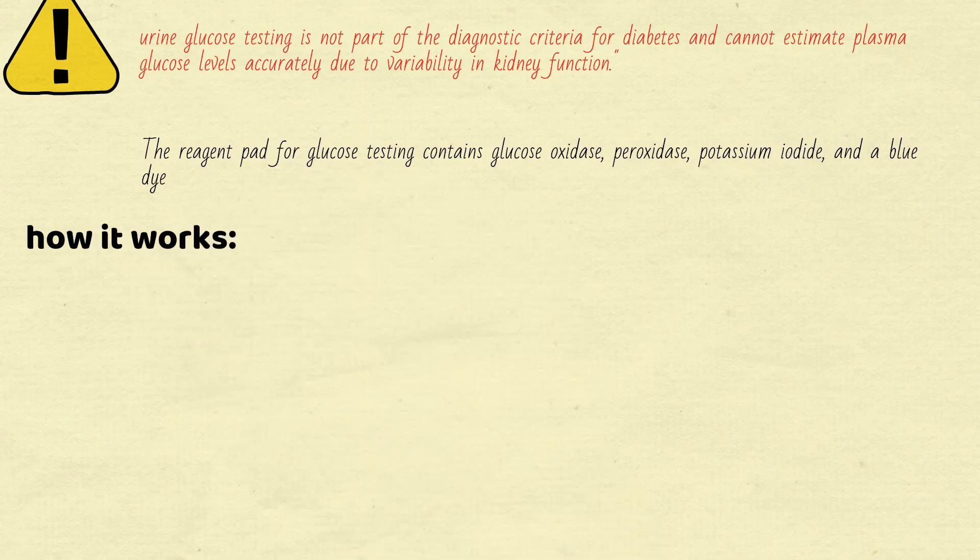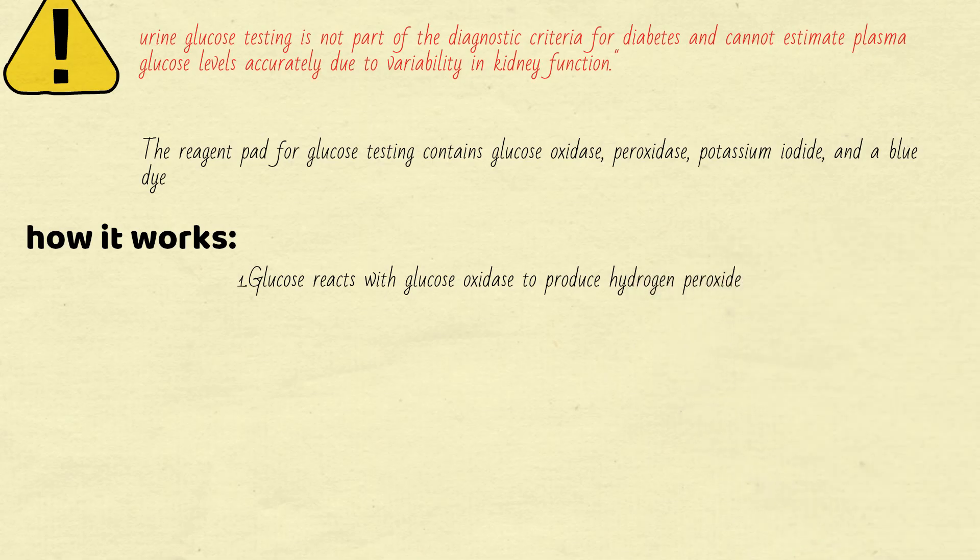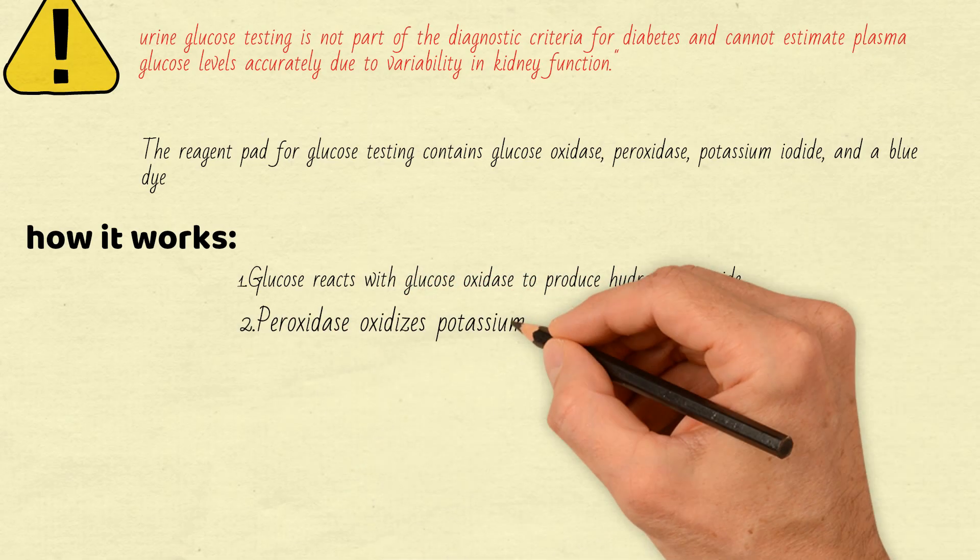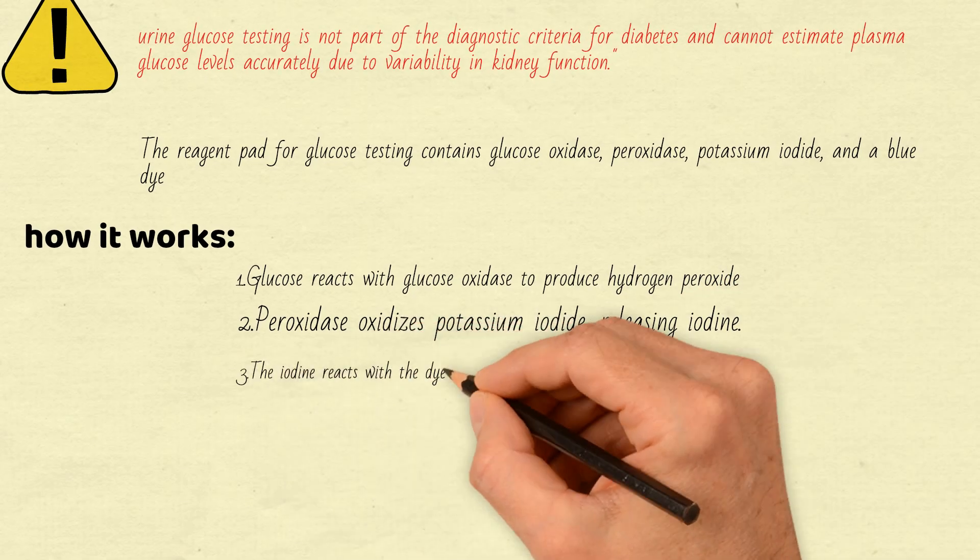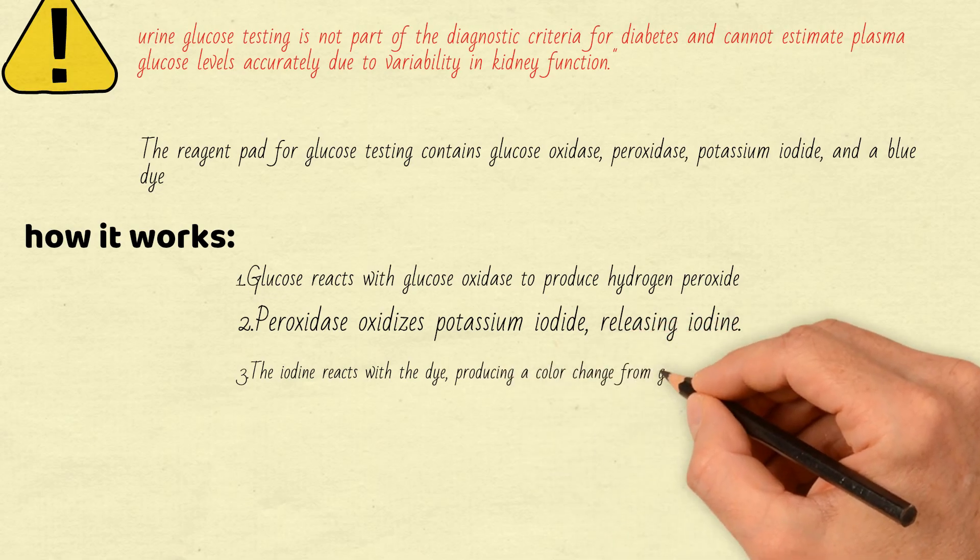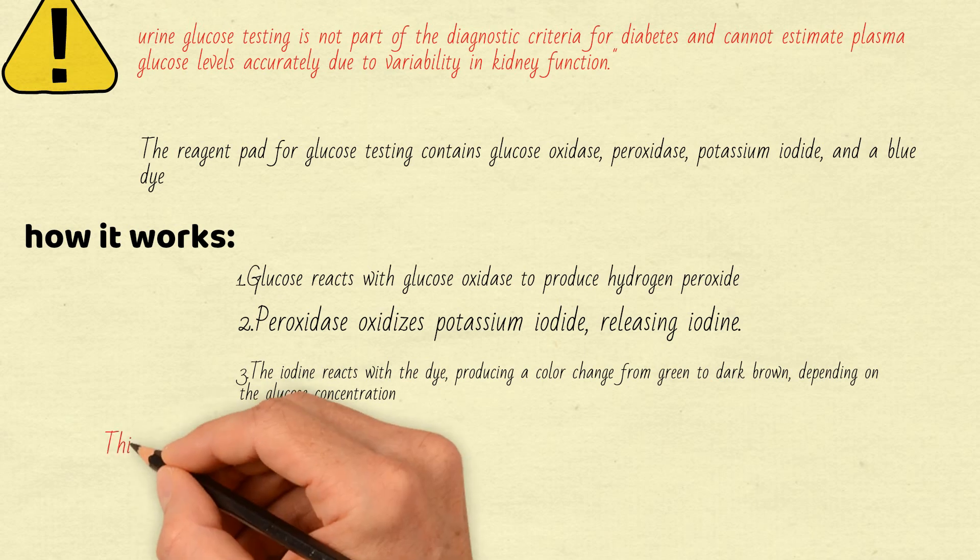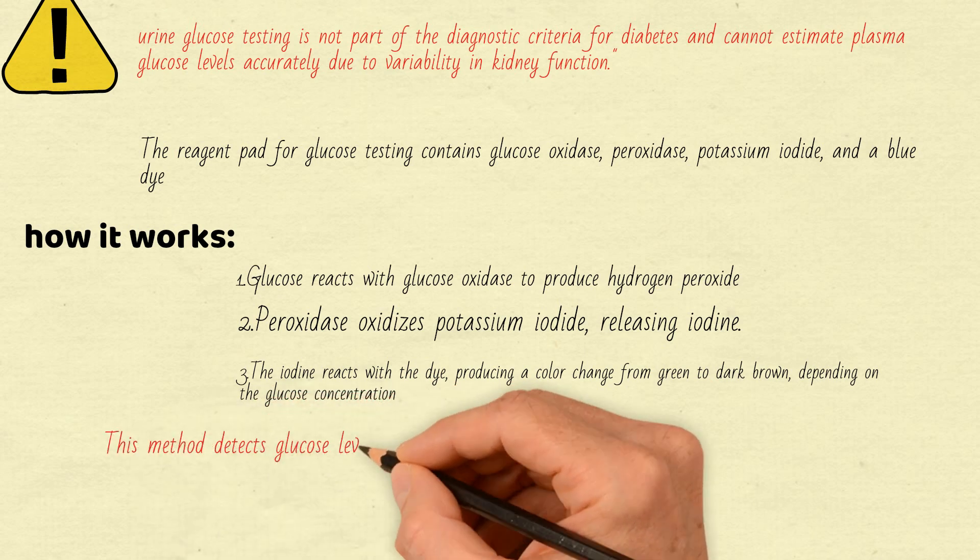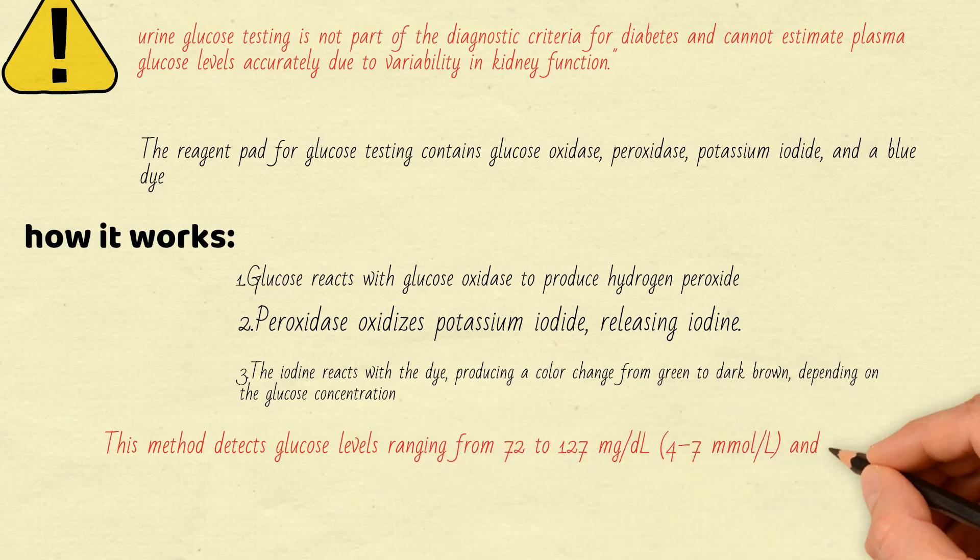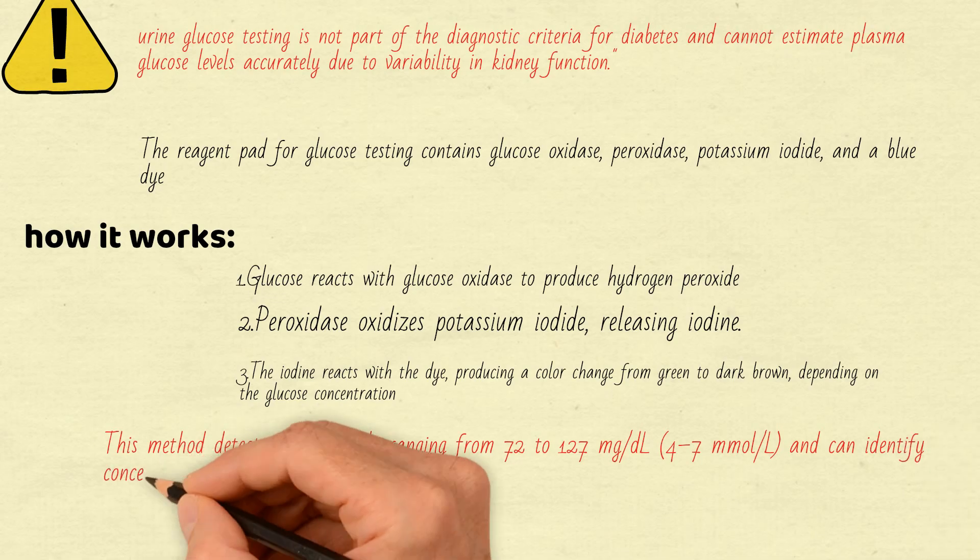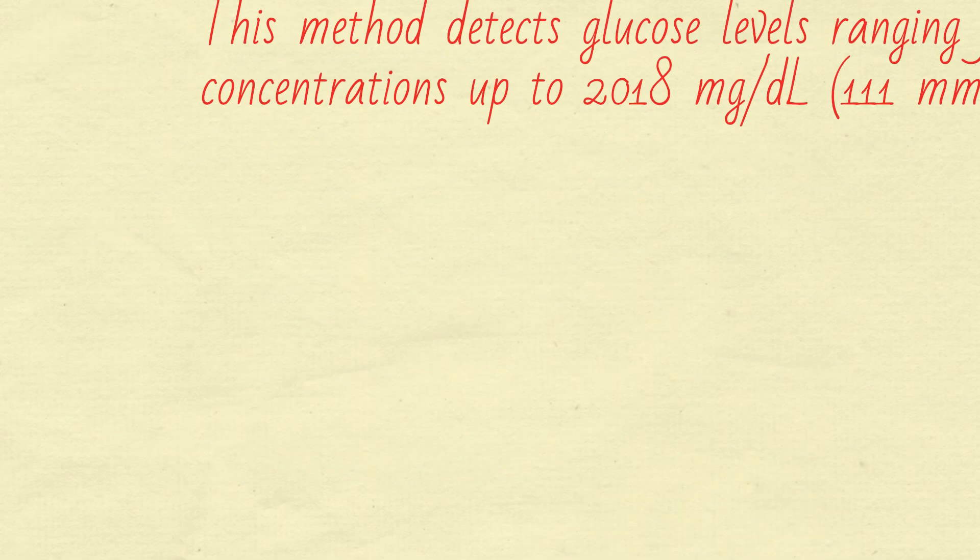Here's how it works: 1. Glucose reacts with glucose oxidase to produce hydrogen peroxide. 2. Peroxidase oxidizes potassium iodide, releasing iodine. 3. The iodine reacts with the dye, producing a color change from green to dark brown, depending on the glucose concentration. This method detects glucose levels ranging from 72 to 127 mg per deciliter (4 to 7 millimoles per liter), and can identify concentrations up to 2018 mg per deciliter (111 millimoles per liter).